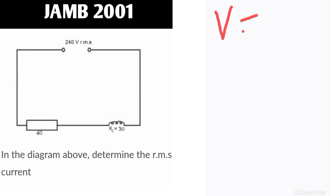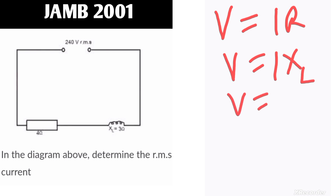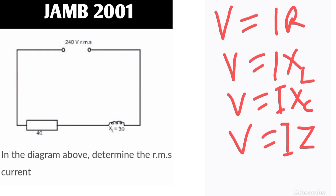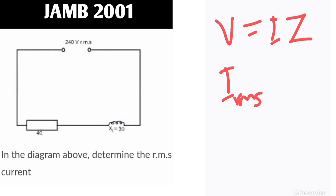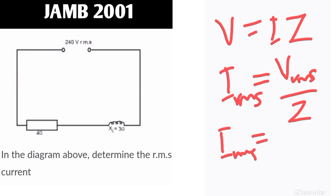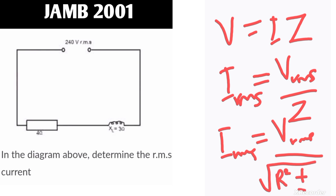Remember that V = IR for a resistor, V = IX_L for inductive reactance, V = IX_C for capacitive reactance, and V = IZ for impedance. We are going to use the last formula V = IZ to find what we are looking for. So i_rms = v_rms / Z. Since the circuit contains an inductor and a resistor, the impedance Z = square root of (R² + X_L²).